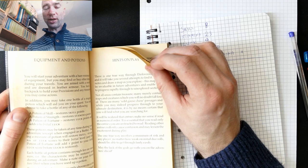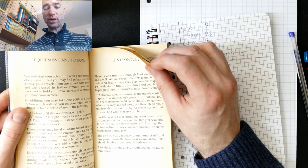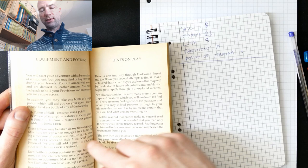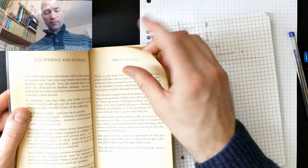And while you may indeed progress through to your ultimate destination, it is by no means certain that you will find what you are searching for. It will be realized that entries make no sense if read in numerical order. That's not interesting. The one true way involves a minimum of risk, and any player, no matter how weak on initial dice rolls, should be able to get through fairly easily. That's one that's been sort of copied and pasted into other books. But that is not true. But that's another story. May the luck of the gods go with you on the adventure ahead. And may your stamina never fail.